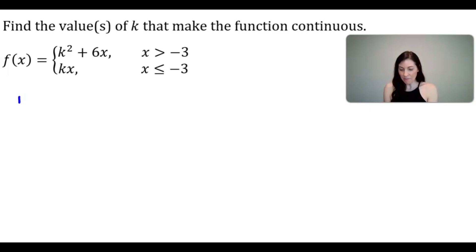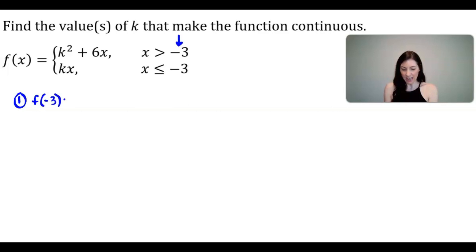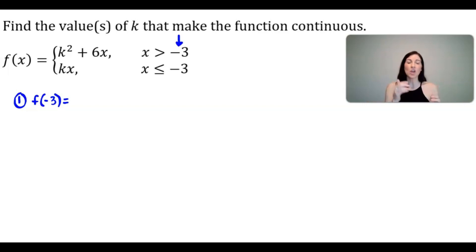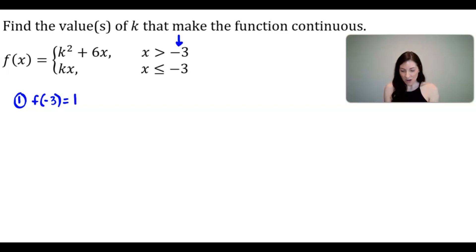The first step in the definition of continuity is making sure the function exists at the x value in question, which is negative 3. I first think about the value of the function at negative 3. Since the bottom function has a domain where x is less than or equal to negative 3, I'll use that function and plug in negative 3 for x, giving me negative 3K.